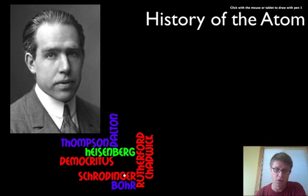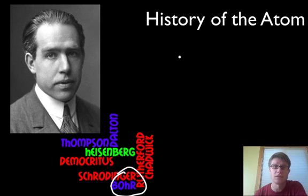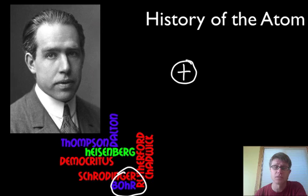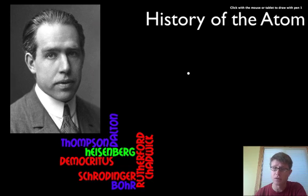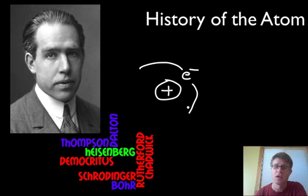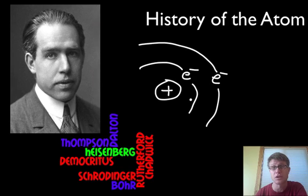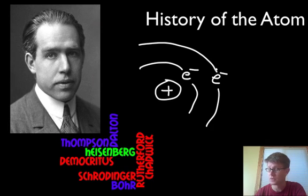Next this is Niels Bohr, who is Danish and worked in Rutherford's lab. The problem with the Rutherford model was that physics predicts a negative charge would quickly be attracted to the positive charge inside, so the whole model didn't really work. Bohr figured out that we've got this positive charge on the inside and electrons going around the outside, but they go in specific orbits. Those electrons had to travel in specific orbits around the outside. That's the Bohr model — a positive nucleus with electrons going around in specific orbits.